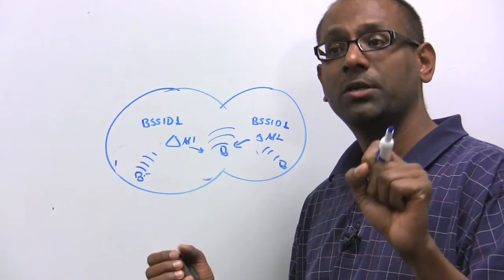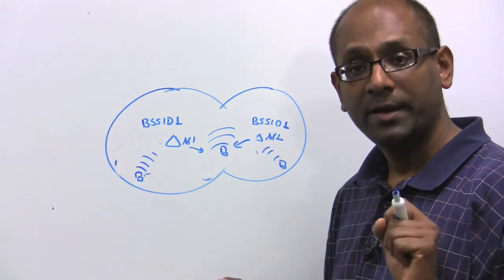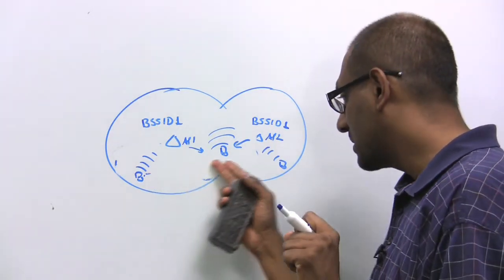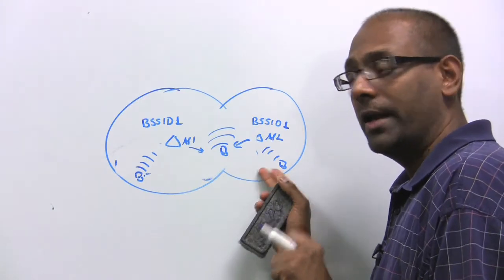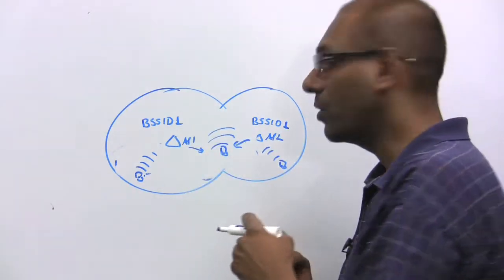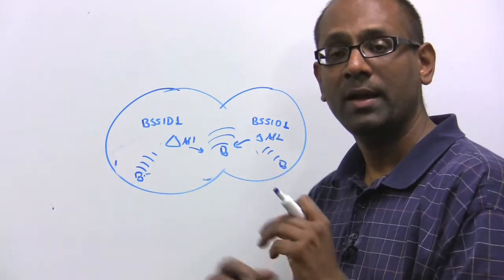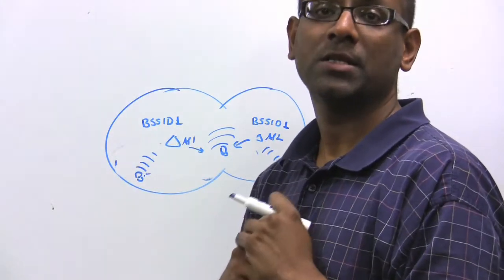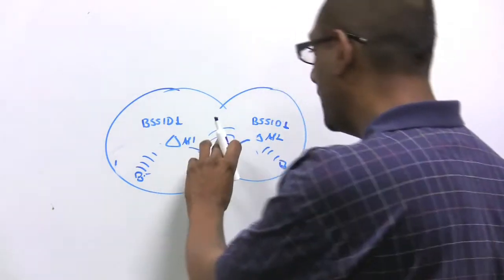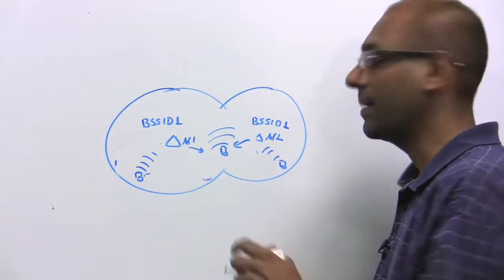Now, notice you took the decision-making transparently away from the client. As the client moves, it is up to the infrastructure to figure out when access point 2 is better served to serve the client than access point 1, and transparently change this association, or transparently change this assignment. From a client perspective, there is no handoff. So how does this happen?